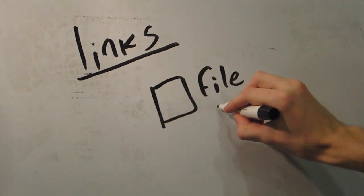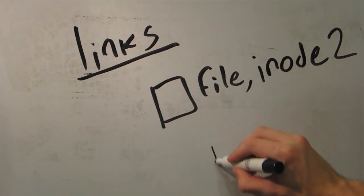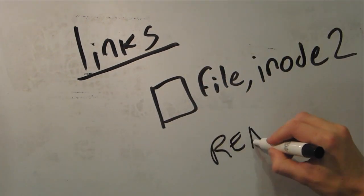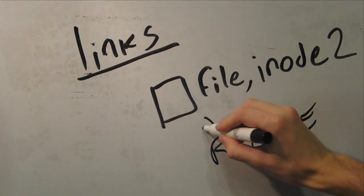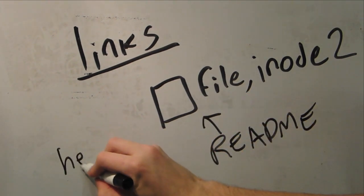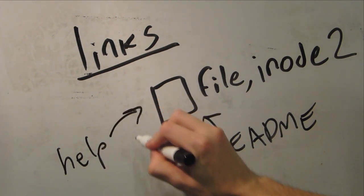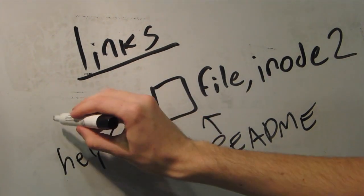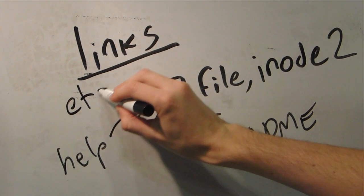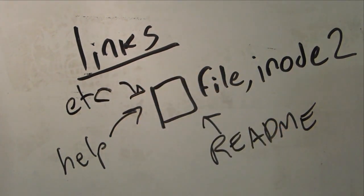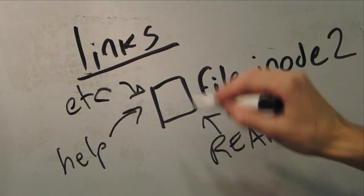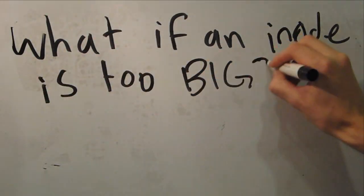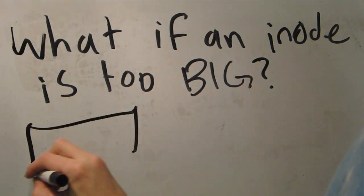So you have a file — inode2, for example — and in the operating system you can have a bunch of file names that point to this file. You could have readme, you could have help, etc. All of these are links to the same inode, so when you open one of these, it displays the data that's in the blocks referenced by that inode. Remember, all inodes are stored in the inode table in the superblock.